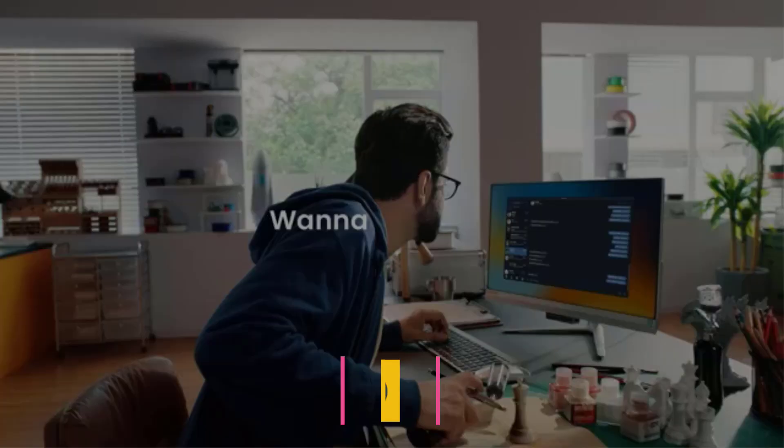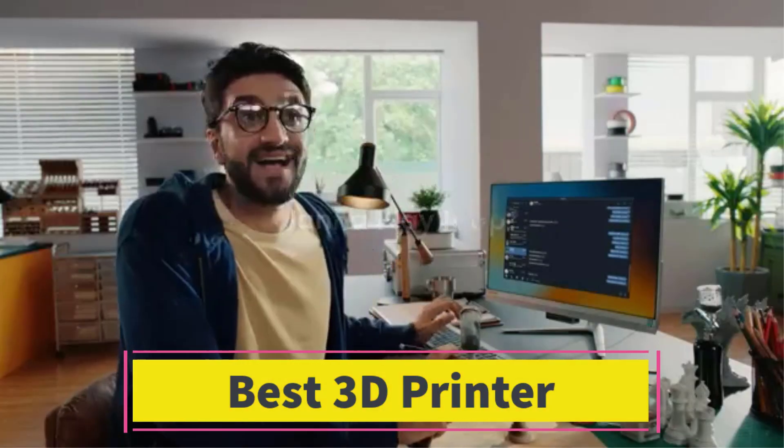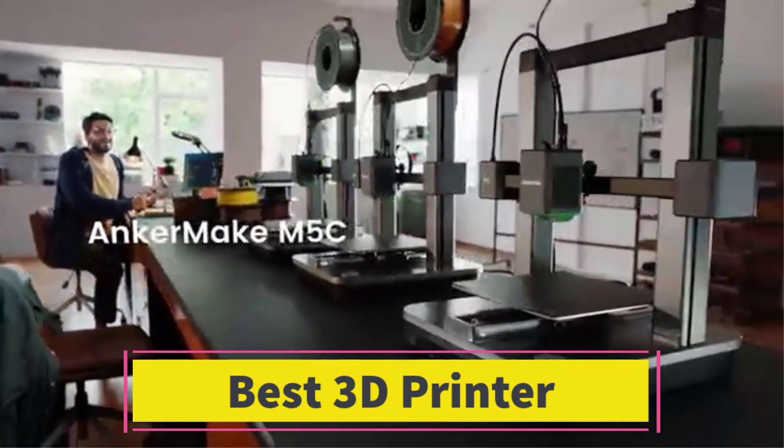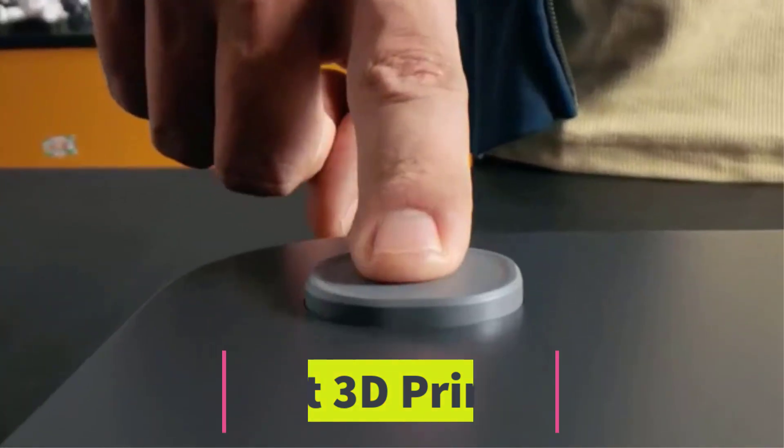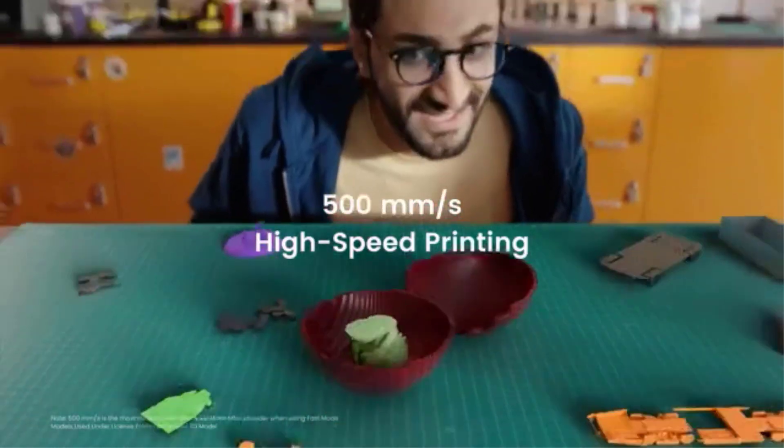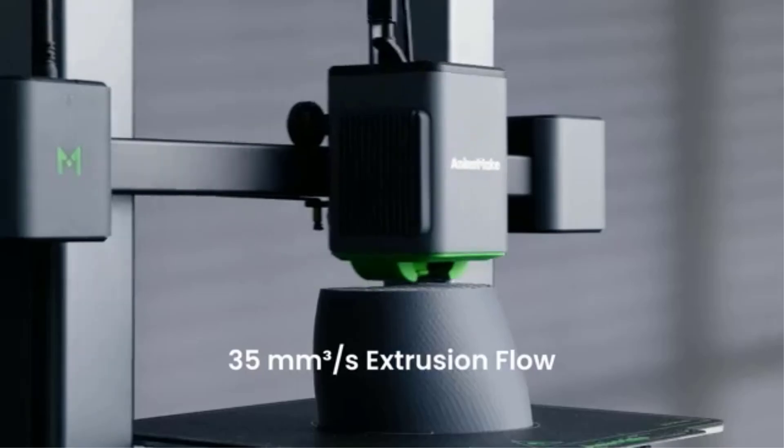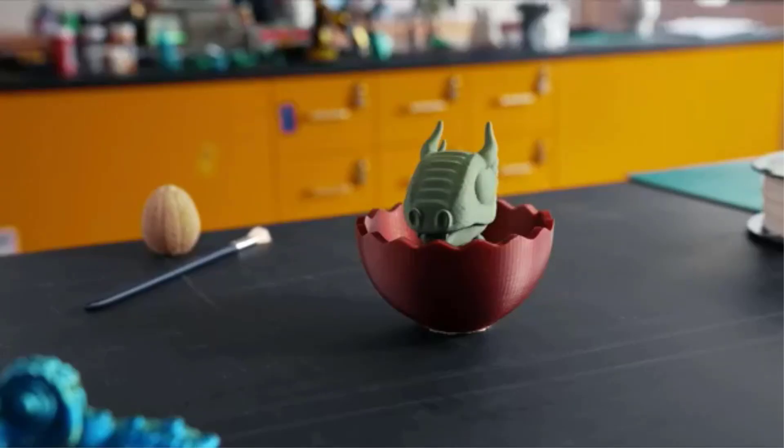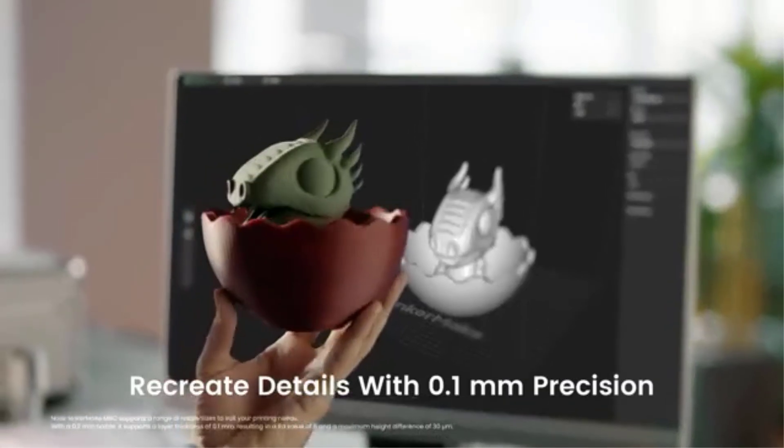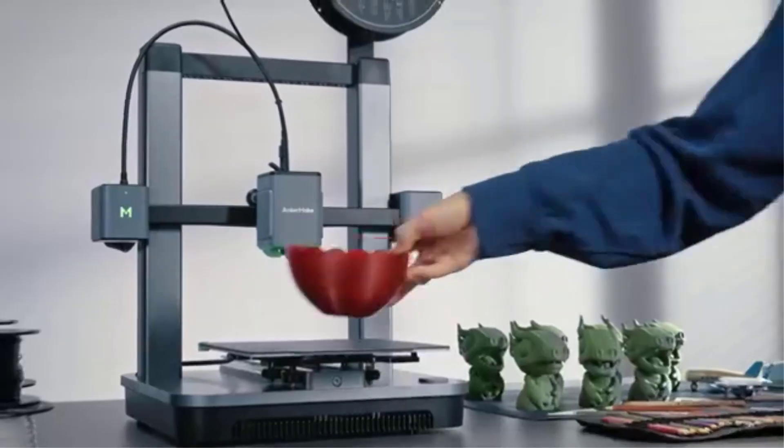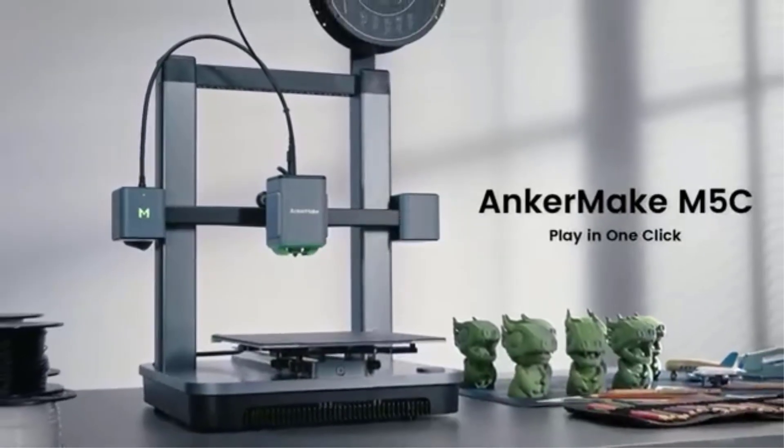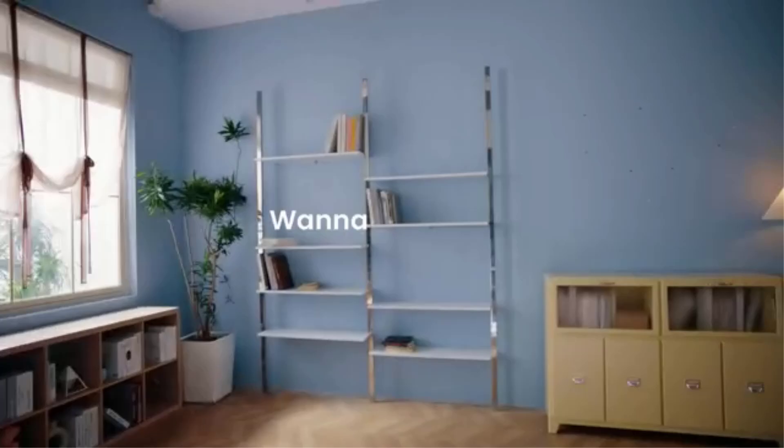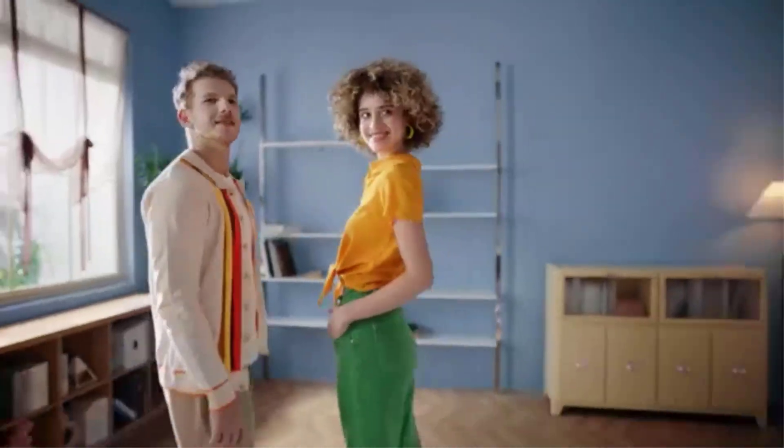Number 3: The AnkerMake M5C 3D printer is a high-speed, feature-rich 3D printer designed for both enthusiasts and professionals who need fast, reliable prints with high-quality results. With a 500mm-per-second high-speed printing capability, the M5C is one of the fastest printers in its class, allowing users to complete prints more quickly without compromising on detail or precision. This makes it ideal for projects requiring rapid prototyping or high-output production.